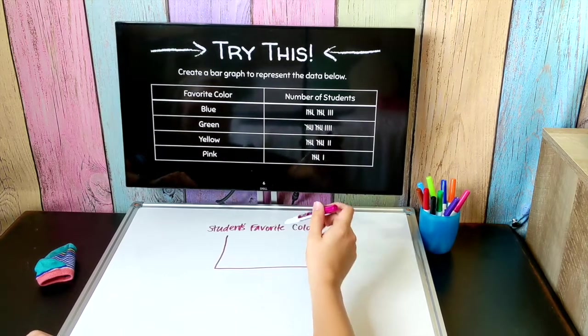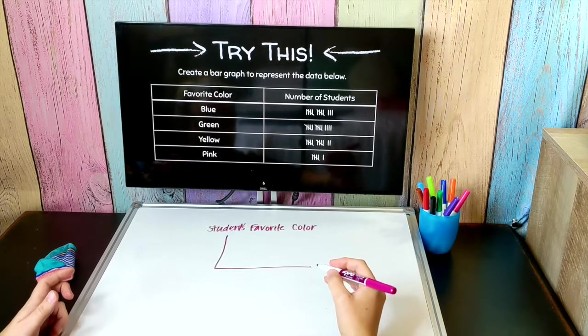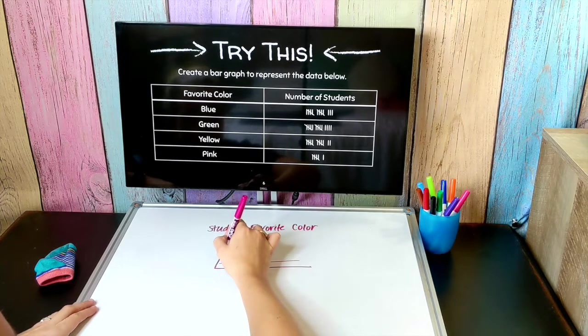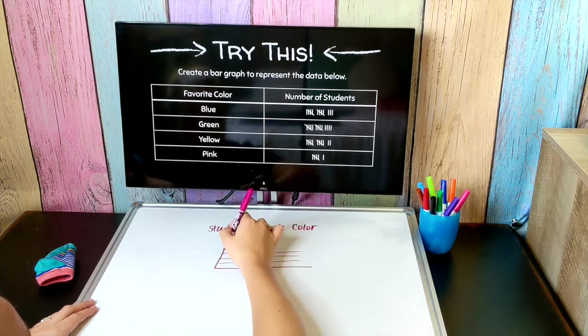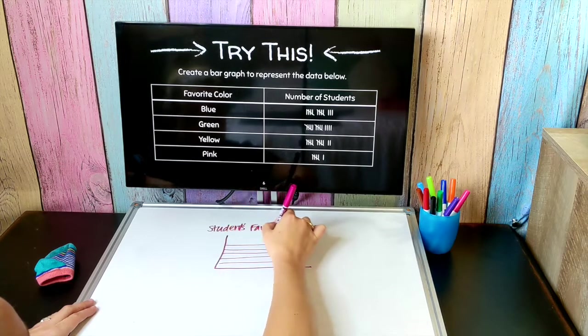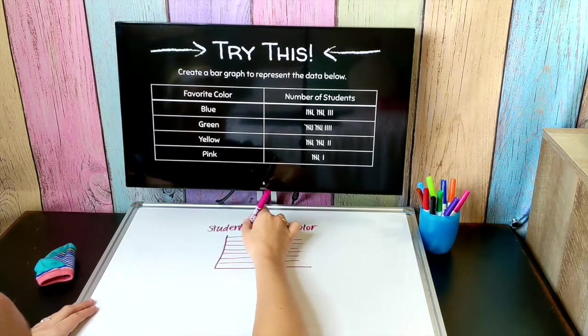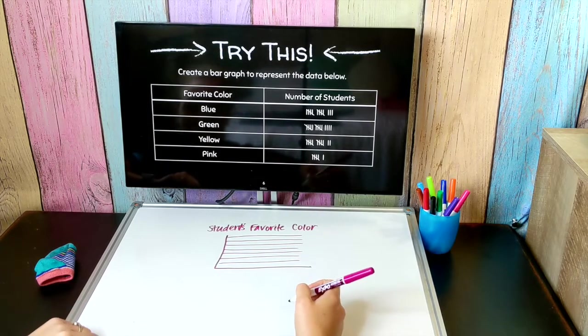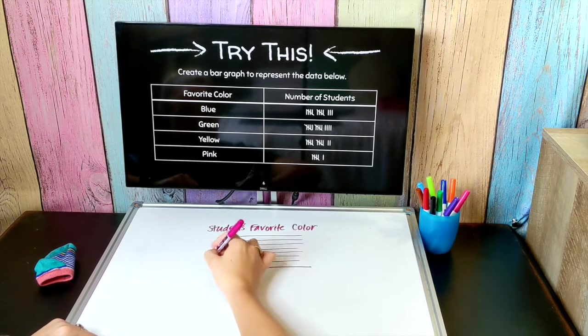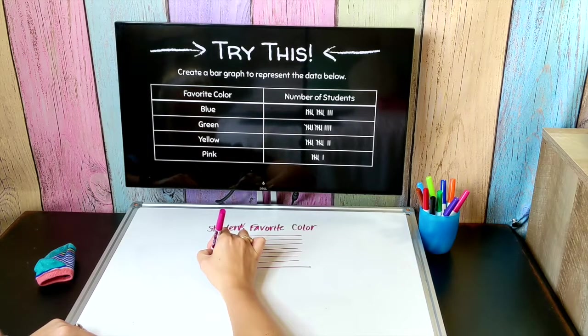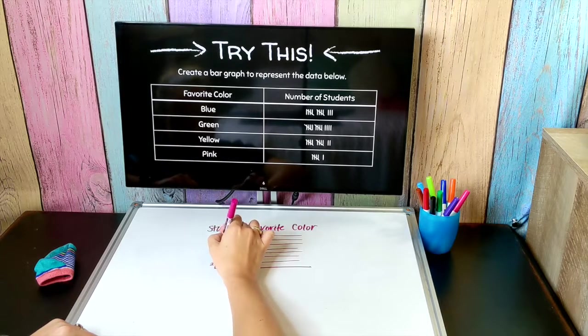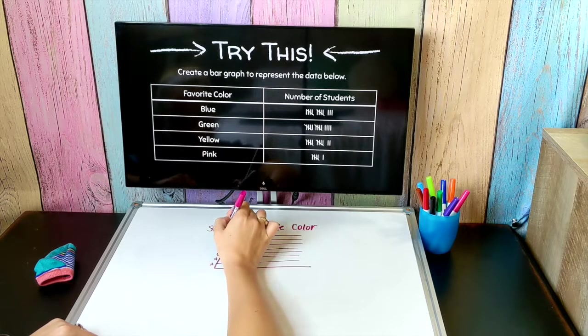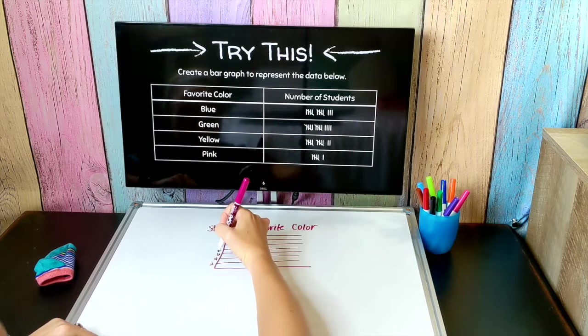What I could do is use a different scale. I could count by twos: 2, 4, 6, 8, 10, 12, 14. Again having lined notebook paper will make this a lot easier than drawing on a whiteboard. Now that I've chosen my scale I'm going to add my labels. So this was 2, 4, 6, 8, 10, 12, 14. And that was the number of students.